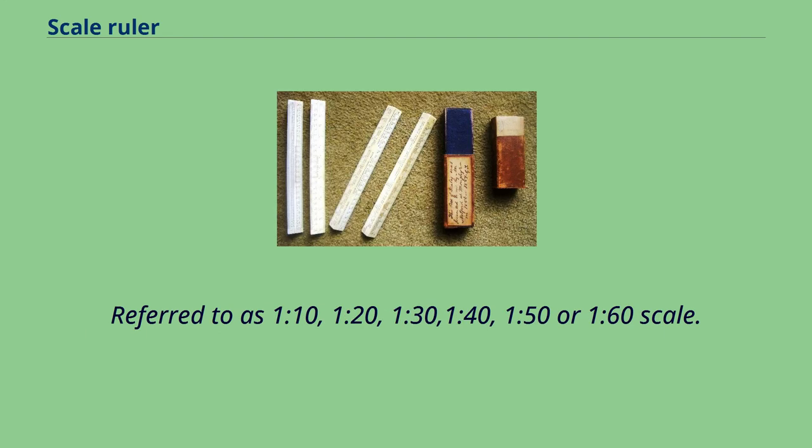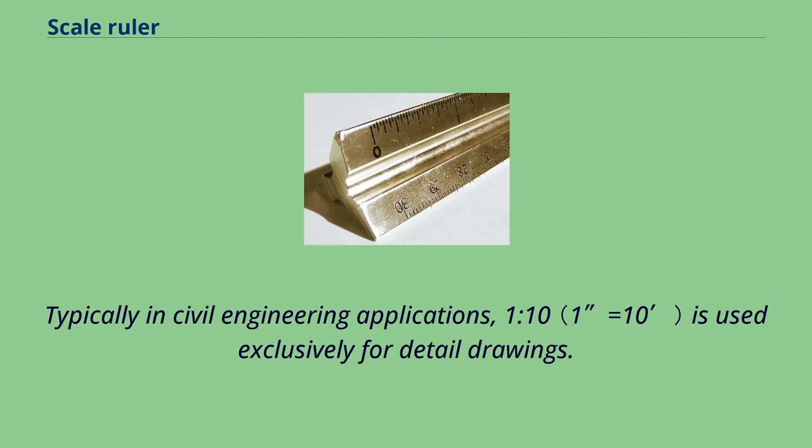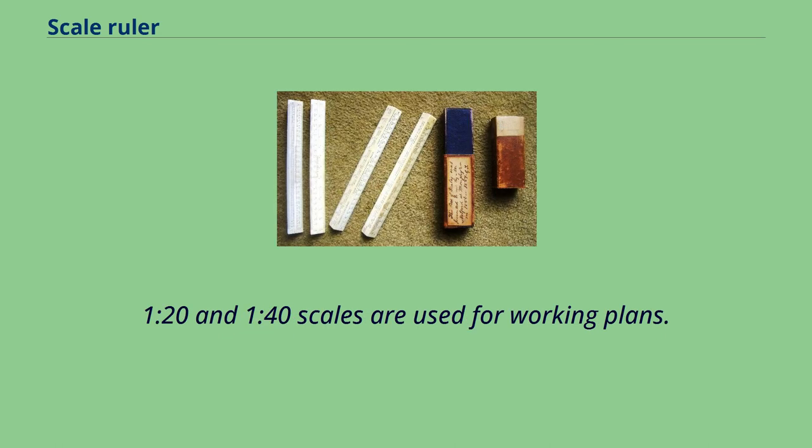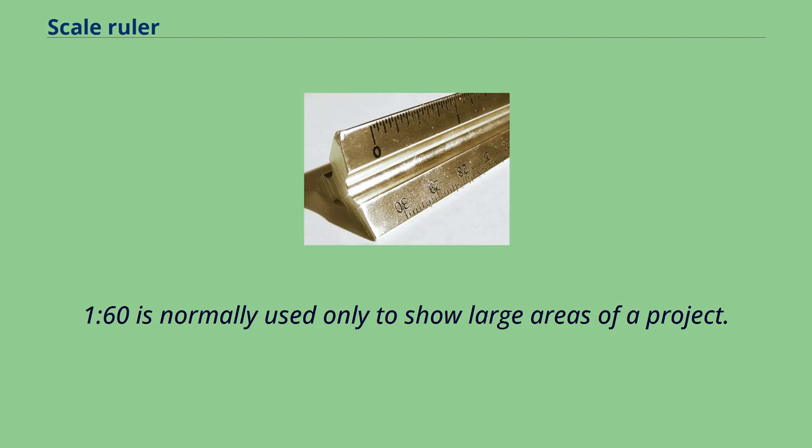Referred to as 1:10, 1:20, 1:30, 1:40, 1:50, or 1:60 scale. Typically in civil engineering applications, 1:10 is used exclusively for detailed drawings. 1:20 and 1:40 scales are used for working plans. 1:60 is normally used only to show large areas of a project.